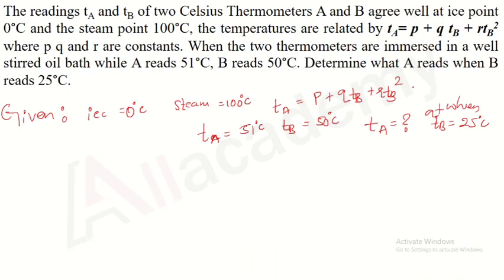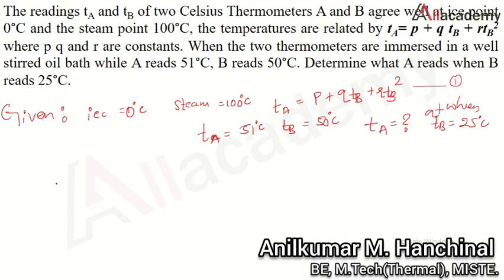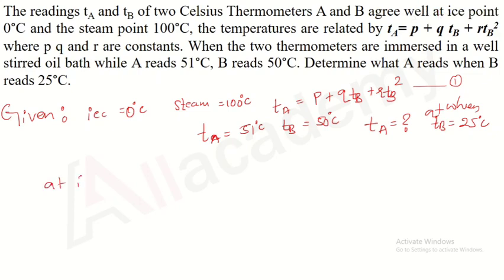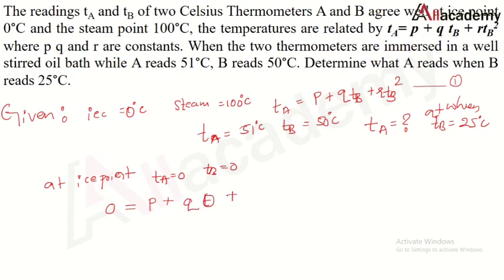At the ice point, ta = 0 and tb = 0. Substituting into equation 1: 0 = p + q·(0) + r·(0)². From this equation we get p = 0. At the steam point, ta = 100 and tb = 100.